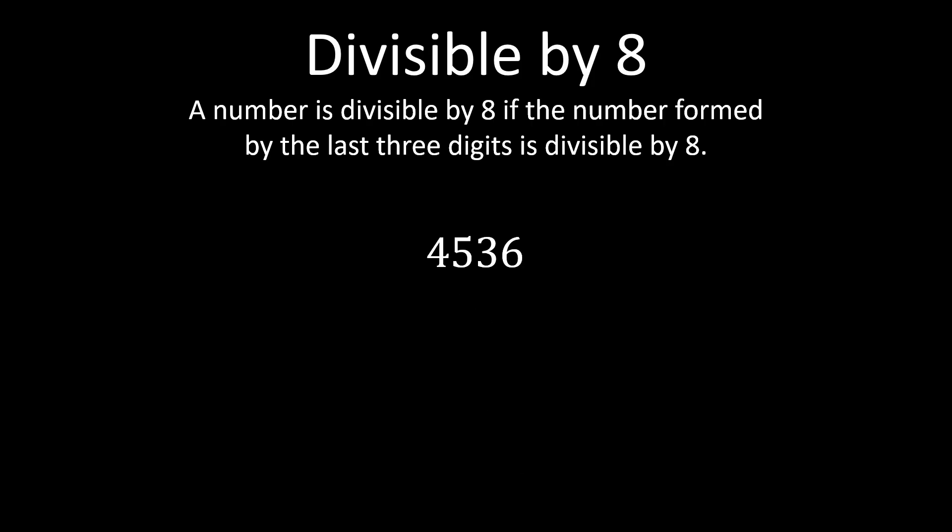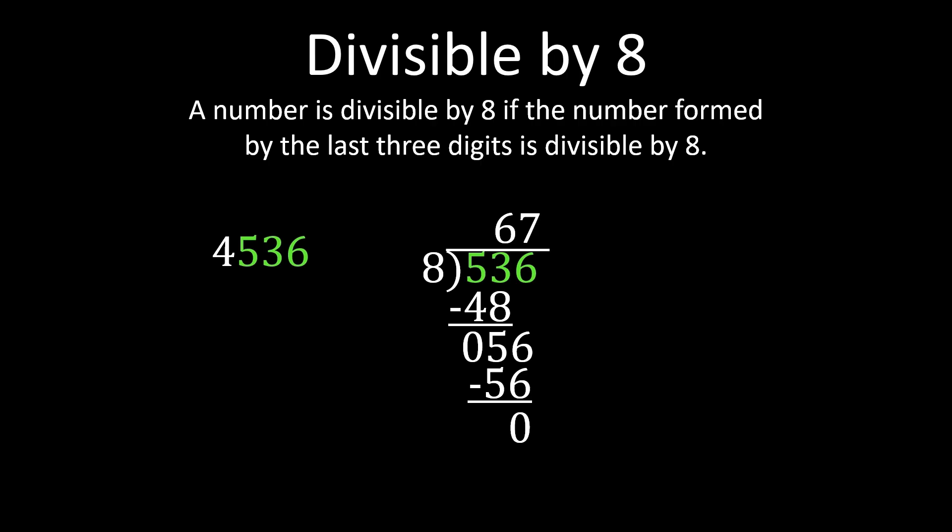Let's look at one more example: 4,536. We're only going to consider the last 3 digits, so even though you have to divide by 8, you don't have to work with as many digits. We only need to consider 536. When we divide 536 by 8, we get 67, a whole number, which means 4,536 is divisible by 8. It's also important to note that if you end up with a remainder when working through the long division steps, then your number is not divisible by 8.